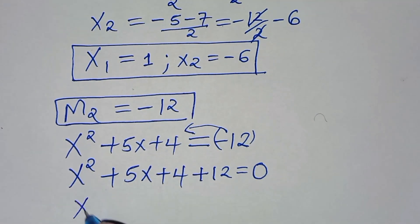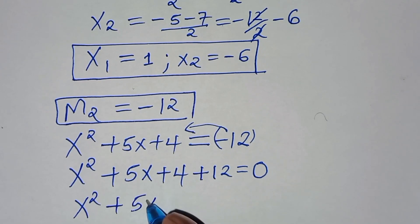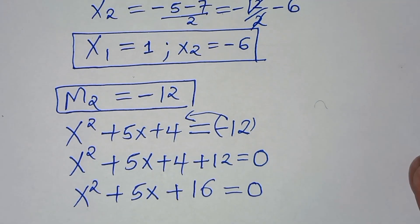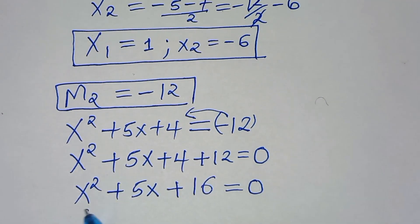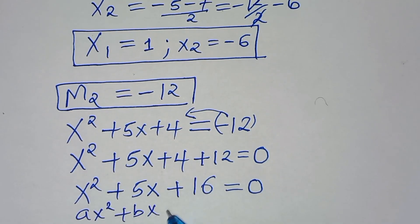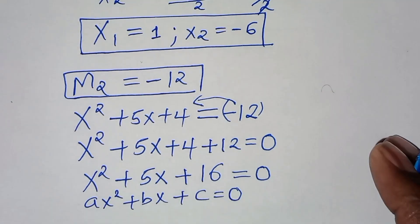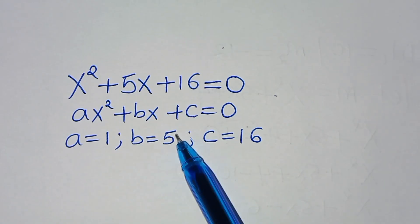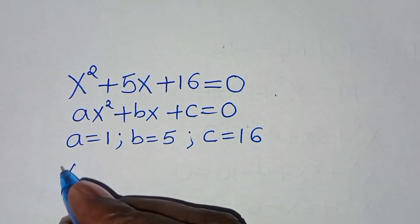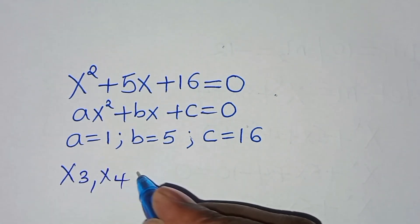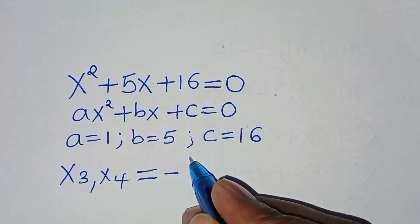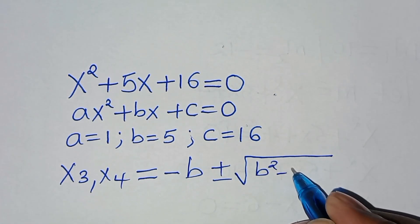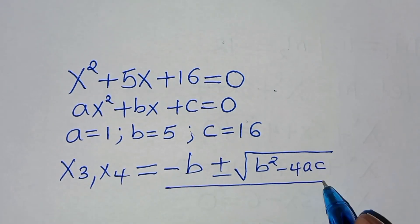So x²+5x+16 = 0. From this quadratic, a=1, b=5, c=16. Applying the quadratic formula: x = (-5 ± √(5²-4×1×16)) / (2×1).